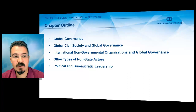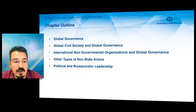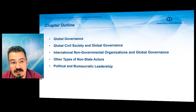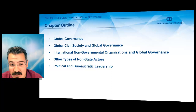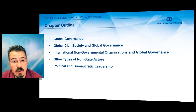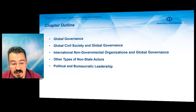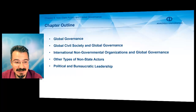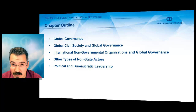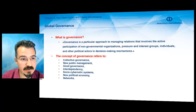In this chapter, there are five main titles. The first is Global Governance. The second focuses on global civil society and global governance. The third focuses on international non-governmental organizations and global governance. The fourth discusses other types of non-state actors. And finally, the fifth focuses on political and bureaucratic leadership in global governance.